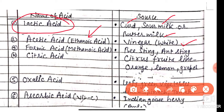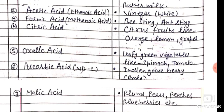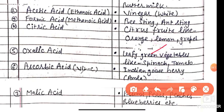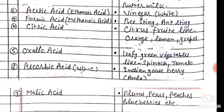Next is Formic acid, also known as Methanoic acid, found in bee sting. Next is Citric acid, found in citrus fruits like orange, lemon, and grapes. Next is Oxalic acid, found in green leafy vegetables and tomato. Next is Ascorbic acid, commonly known as Vitamin C, found in Indian gooseberry (Amla).